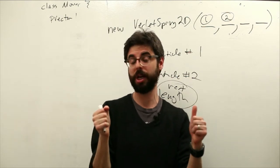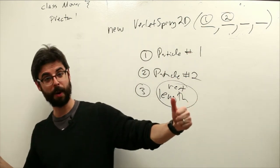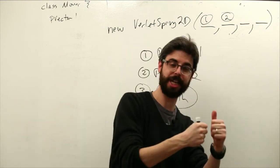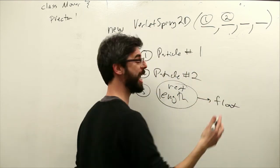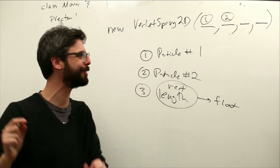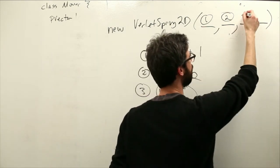The third argument is the rest length. So what is the rest length? What is the length of that spring that it would come to rest at? So if we pull it apart, it springs back. If we push it in, it springs back. So that of course is a float. Just a number in pixels. In pixels. We don't have to do any crazy conversion here. And that's the third argument.